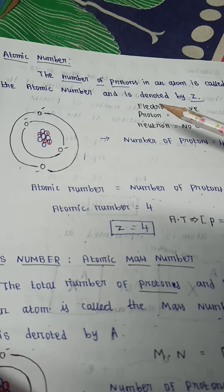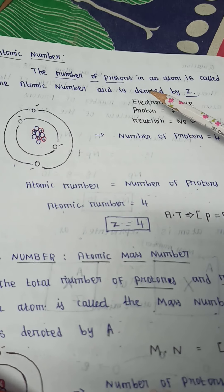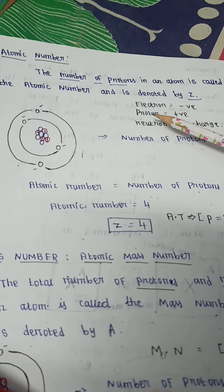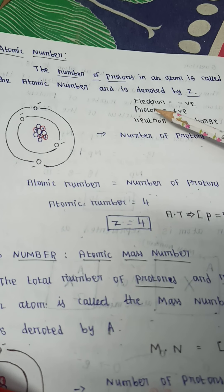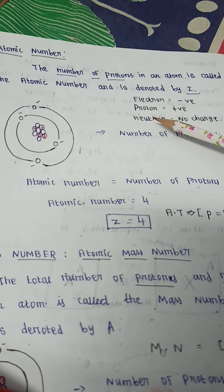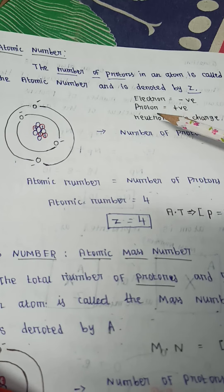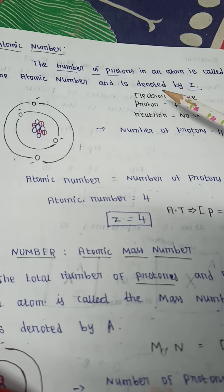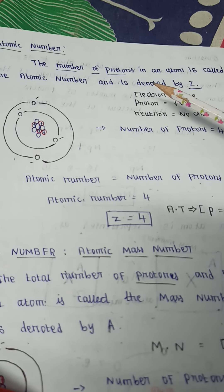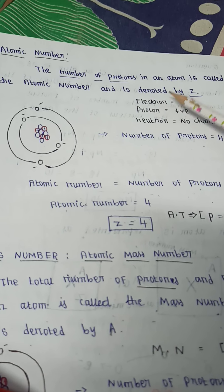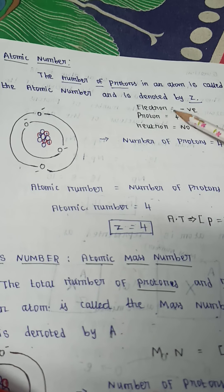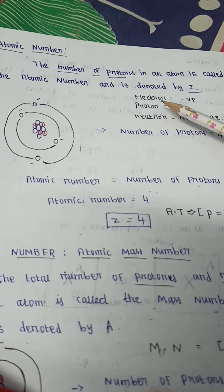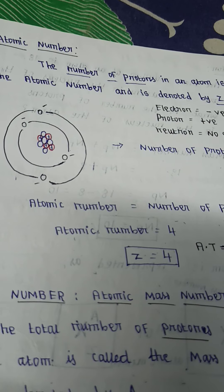First, you will see the atomic number. The number of protons in an atom is called the atomic number. Every atom has a number of protons present — that is the atomic number. The number of protons in an atom is called the atomic number, and it is denoted by capital Z.